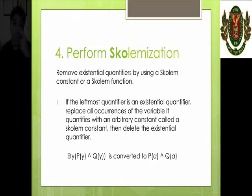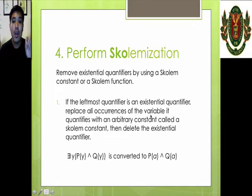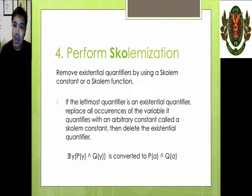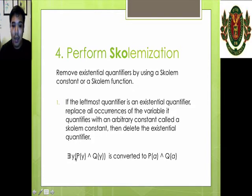If the leftmost quantifier is an existential quantifier, we will just replace all occurrences of the variable inside it with an arbitrary constant called a Skolem constant — usually a, b, c, d, or s-sub-1, s-sub-2, whatever is more convenient. For example, if we have: there exists a Y such that P of Y and Q of Y, since the leftmost quantifier is existential, we change all occurrences of Y to the constant A, and then remove the existential quantifier.